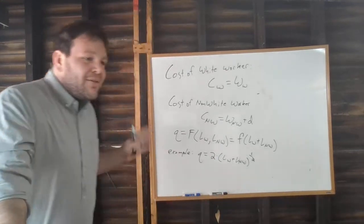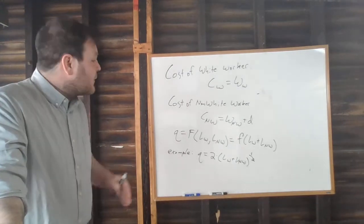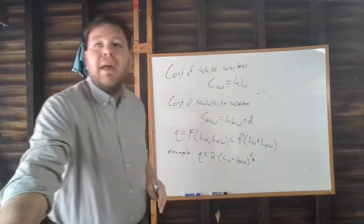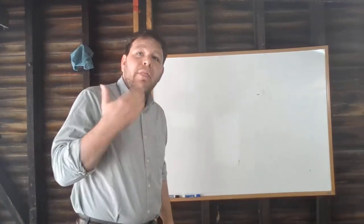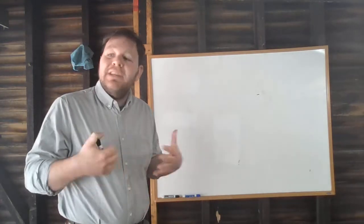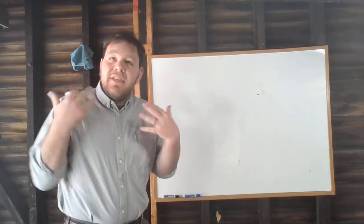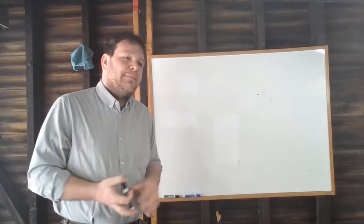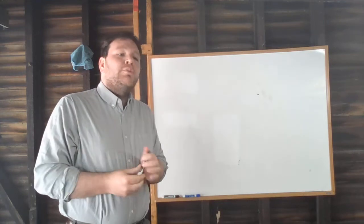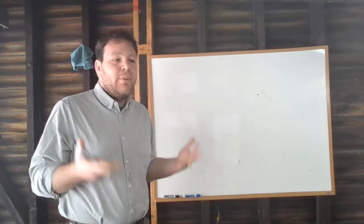Given this setup, let's think about what the firm is going to choose to do — who it will hire for different wages paid to white and non-white workers. The firm will try to maximize its perceived profits, which means maximizing the difference between revenue and what it perceives as the cost of its employees. To maximize profits we must minimize costs, which means finding the cheapest point on each iso-quant that the firm can produce at.